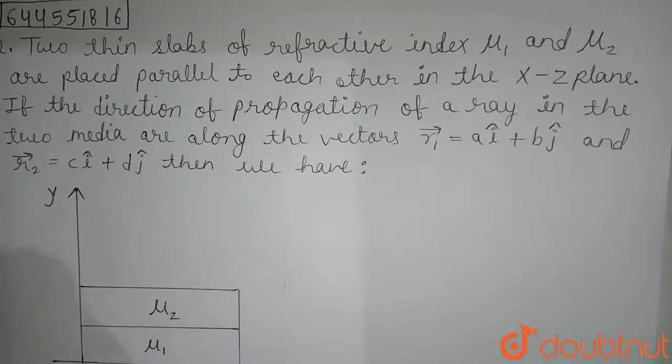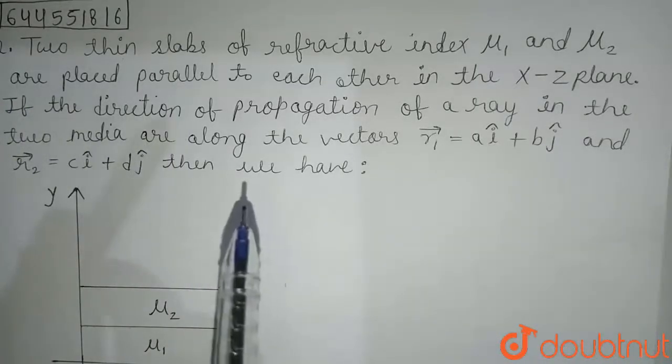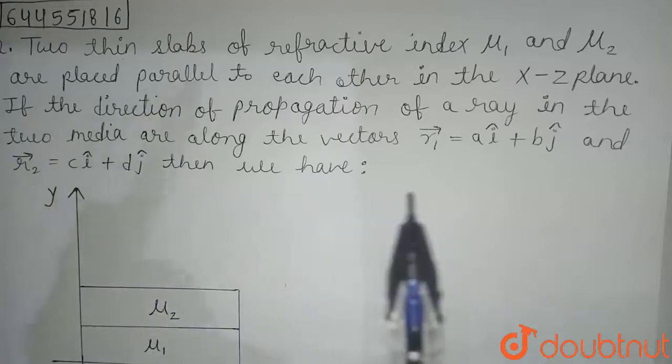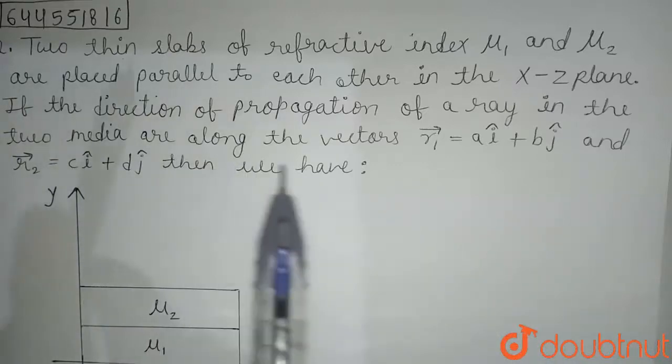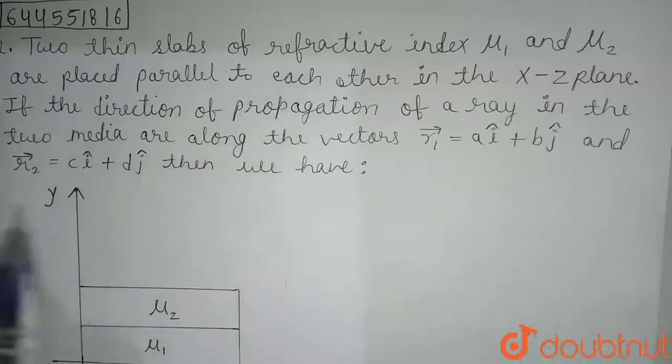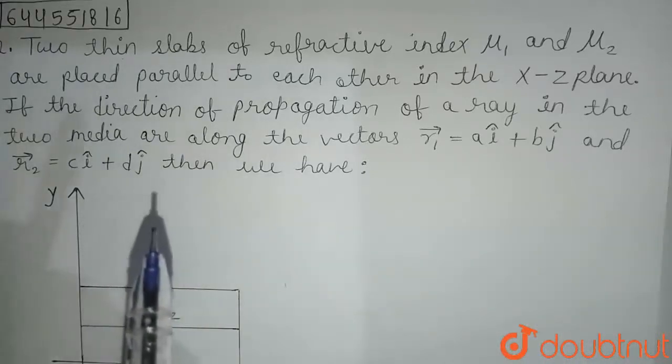Hello friends, our question is: two thin slabs of refractive index μ₁ and μ₂ are placed parallel to each other in the x-z plane. The direction of propagation of the ray in the two media are along the vectors r₁ = ai + bj and r₂ = ci + dj.